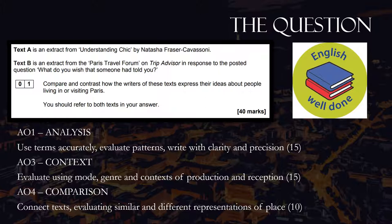How is it being marked? There are 40 marks available. You are credited for your analysis, which includes accurate use of terms, looking at and evaluating patterns, and writing with clarity and precision. You need to use context to explain the features that you find. When we think about context here, we're not necessarily thinking about the historical or social backgrounds of these texts as we might when looking at literature, but we're really looking at context of production and reception — particularly things like mode and genre, audience and purpose. These are the key contexts that influence the way language is being used.